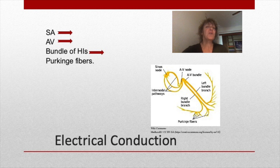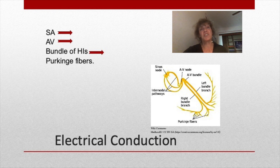The impulse then goes to the AV node, and the stimulus follows down the bundle of His and the Purkinje fibers, which distribute the stimulus across the ventricles, causing them to contract.